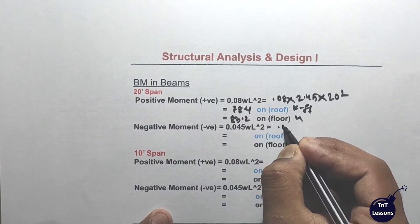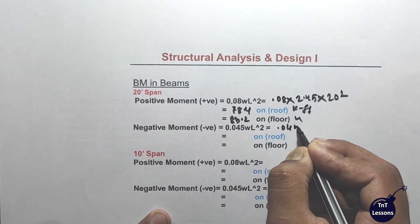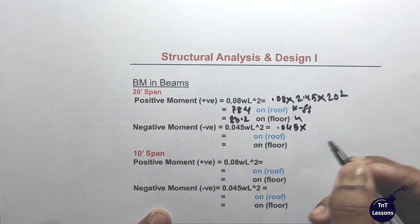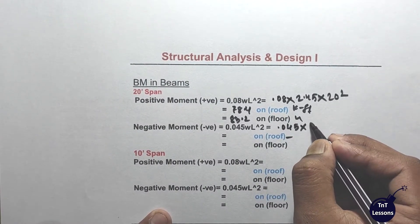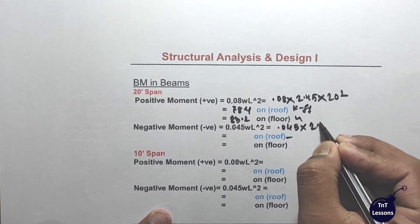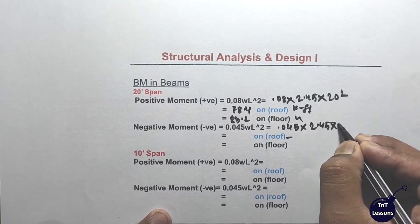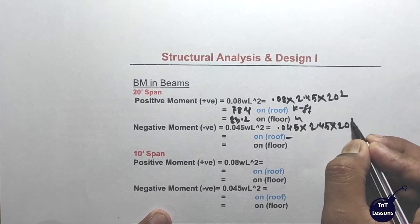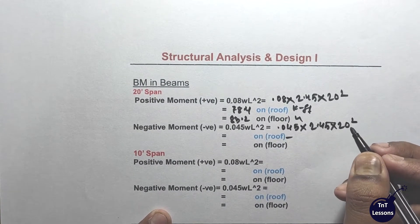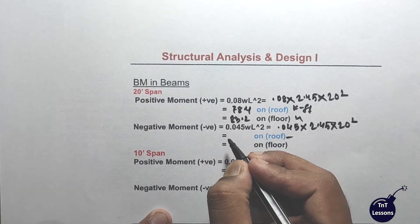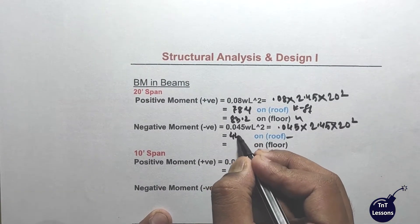The negative moment value for the roof: 0.045 and W is 2.45 into L squared. Then you get 44.1.